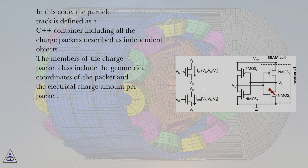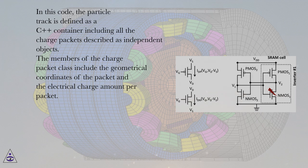the particle track is defined as a C++ container including all the charge packets described as independent objects. The members of the charge packet class include the geometrical coordinates of the packet and the electrical charge amount per packet.